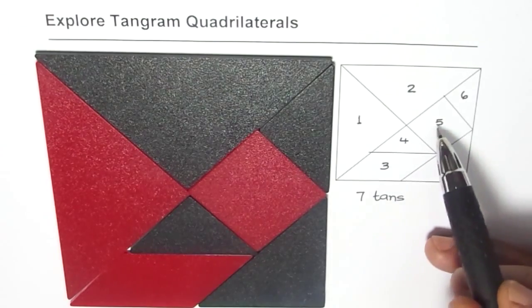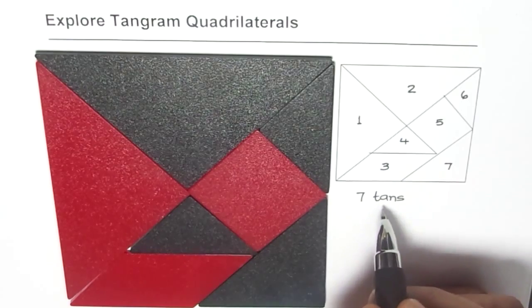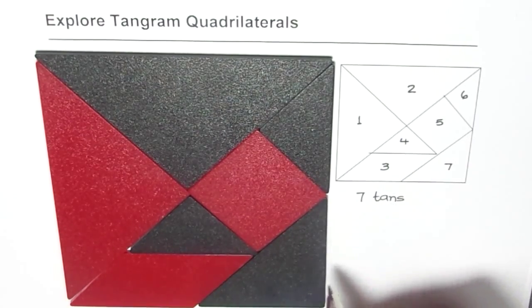So that is 3, 4, 5, and 6, and then the seventh piece. Each piece is called a tan. So there are 7 tans in a tangram.